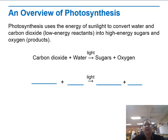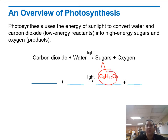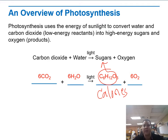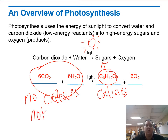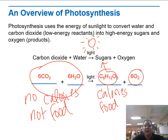Photosynthesis uses the energy of sunlight to convert water and carbon dioxide — called low-energy reactants — into high-energy sugars and oxygen. Glucose has calories; if you were to eat sugar, you're taking in calories. Water and CO2 have no calories. What plants do is use energy from the sun to take no-calorie things and turn them into calorie things — food. Oxygen is then released, which is lucky for us because we can breathe it in.